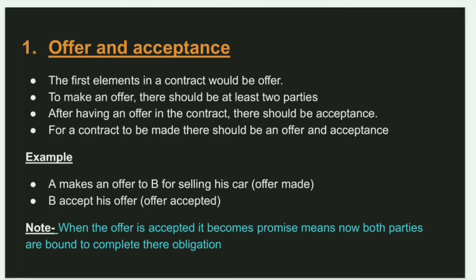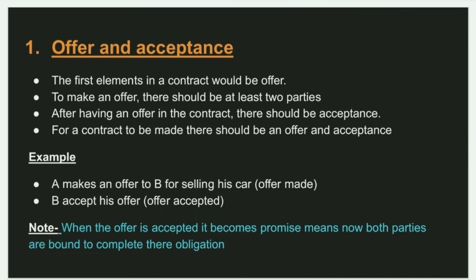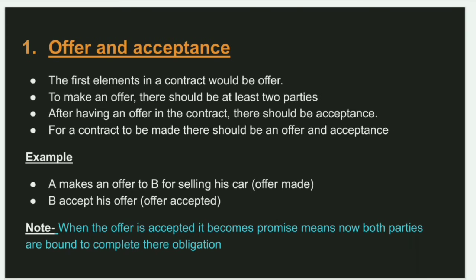So let's start. The first essential of a valid contract is offer and acceptance. There are two parties to a contract: first is the offerer and second is the acceptor. When the offer is accepted, a promise is formed, and after the promise, both parties will be bound.